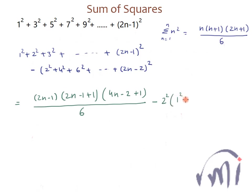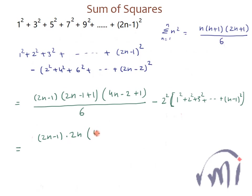Then minus the even squares term — if I take 2 squared common inside the bracket, I get 1² + 2² + 3² till (n−1)². This first part simplifies to (2n−1)(2n)(4n−1) divided by 6, and the even squares term becomes 4 times the sum of first (n−1) squares.